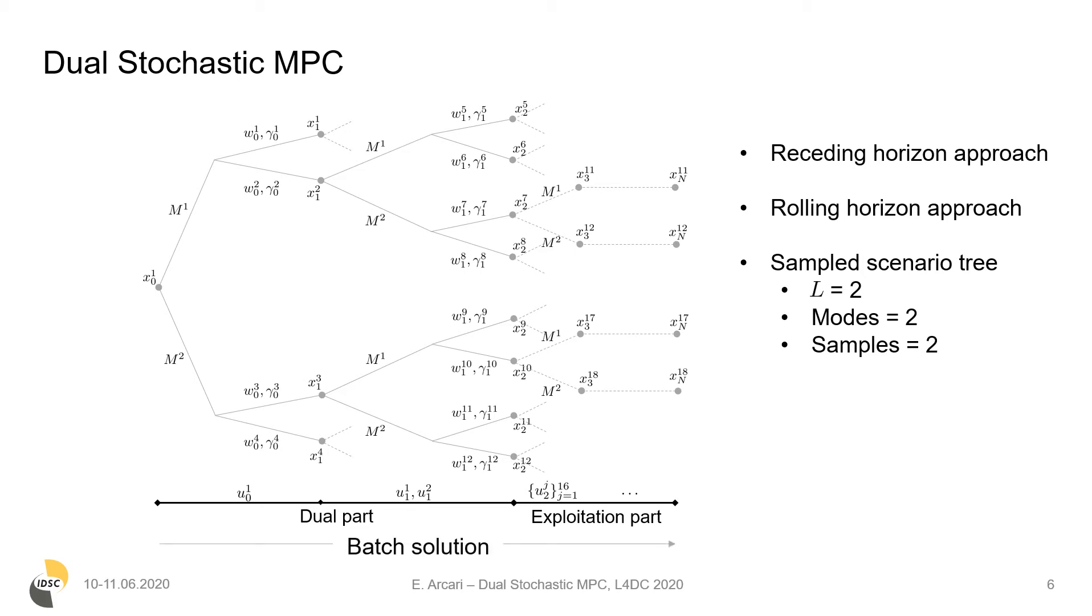The associated optimization problem is solved by simultaneously optimizing over all the control sequences, overcoming the DP recursion.